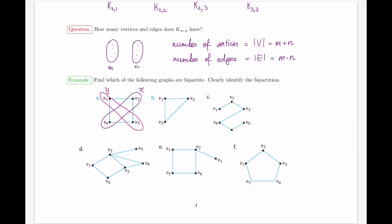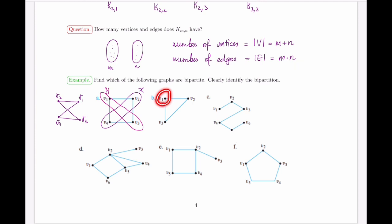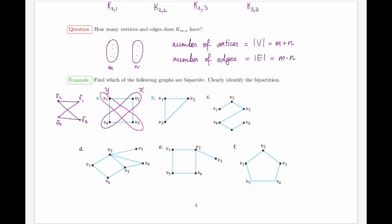For one example, the only candidate for a bipartition would be X = {v2, v4} and Y = {v1, v3}. Redrawing the graph this way confirms that the edges present are exactly the crossing ones — so it is bipartite. For the complete graph on three vertices, it's easy to argue a bipartition doesn't exist: every two vertices are connected, so you can't put more than one vertex in X, but the remaining vertices in Y are also connected — contradiction.